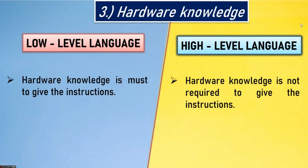Third point: hardware knowledge. In low level language, extensive hardware knowledge is required to give instructions, as this language is very close to hardware. In high level language, hardware knowledge is not required to give instructions, as it is closer to human language.